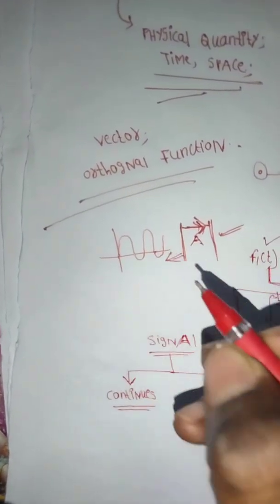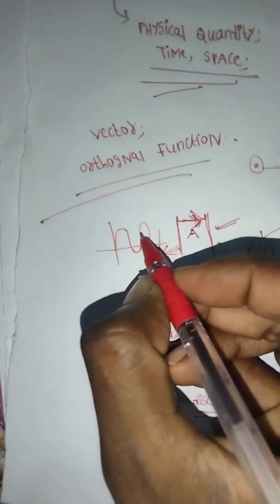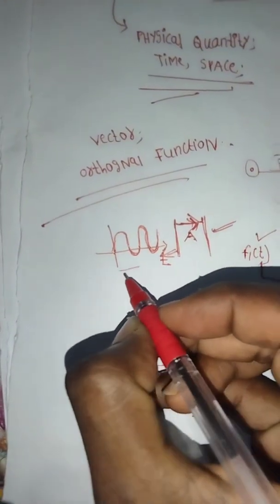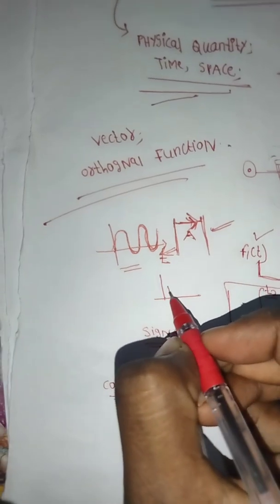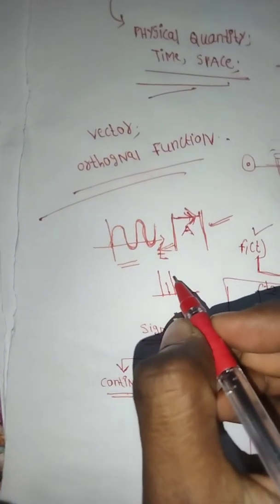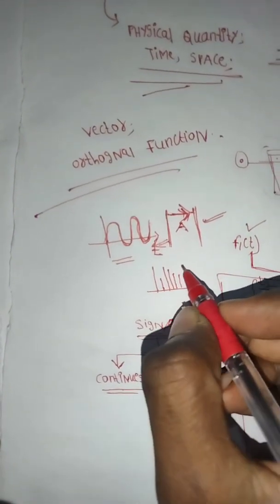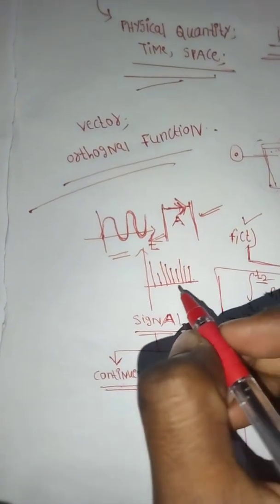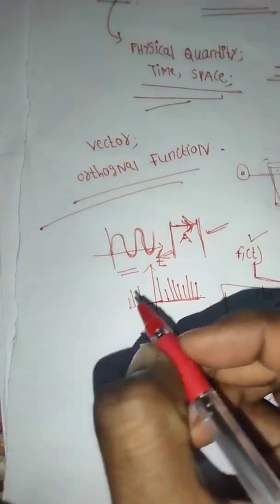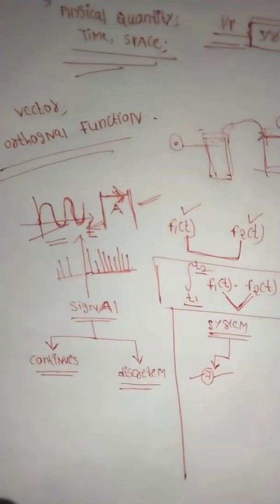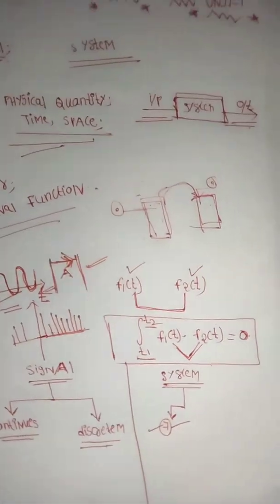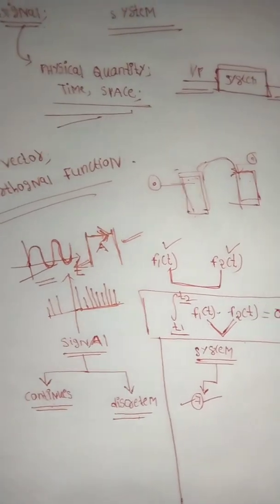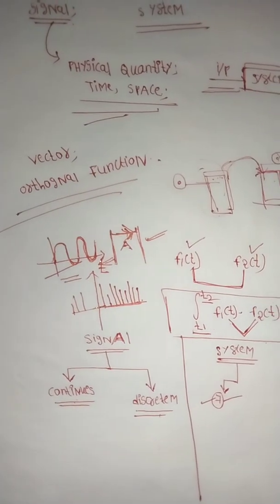Continuous signals are defined with respect to time — they are continuous over time. Discrete signals are defined only at discrete intervals of time. We use both discrete and continuous signals. The signal is a physical quantity which depends on time, space, and other independent variables.